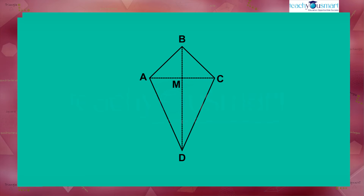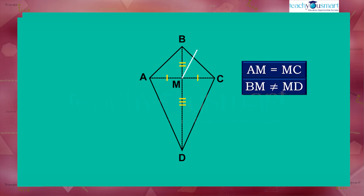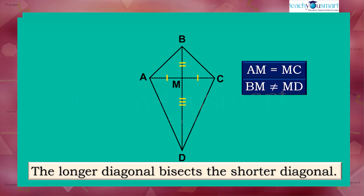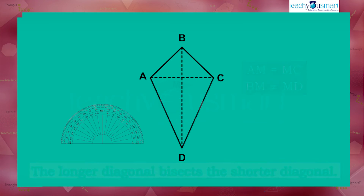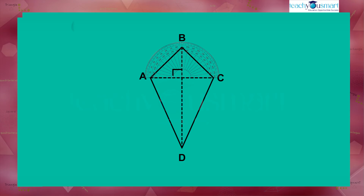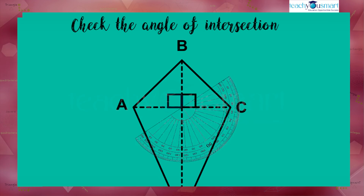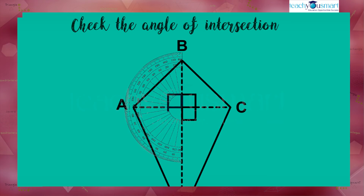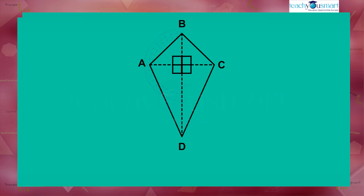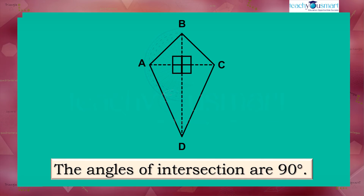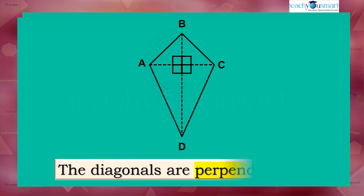Check the length of each segment. We can see that the length of AM is equal to the length of MC, but the length of BM is not equal to the length of MD. That is, in a kite the longer diagonal bisects the shorter diagonal. The angles of intersection are 90 degrees — that is, in a kite the diagonals are perpendicular.